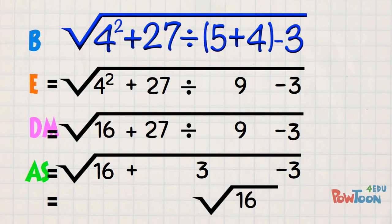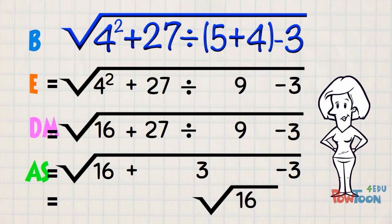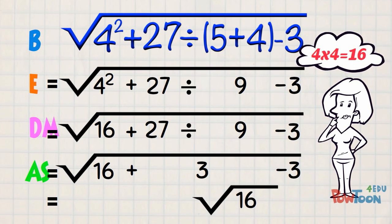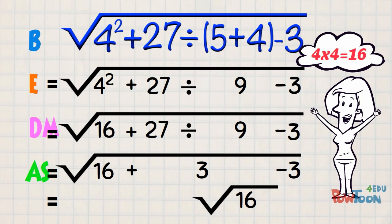16 plus 3 is 19, minus 3, back to 16 again. Put in the root sign. And now we do the square root part, because we evaluated everything contained in that first radical. So now we have the square root of 16. 4 times 4 is 16, so the square root of 16 is 4.